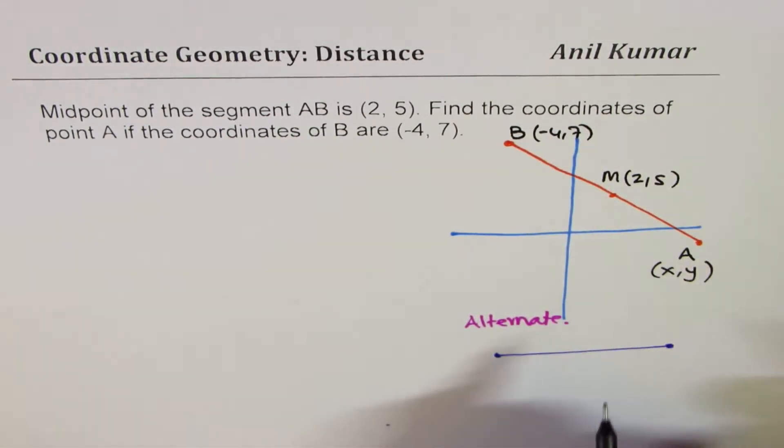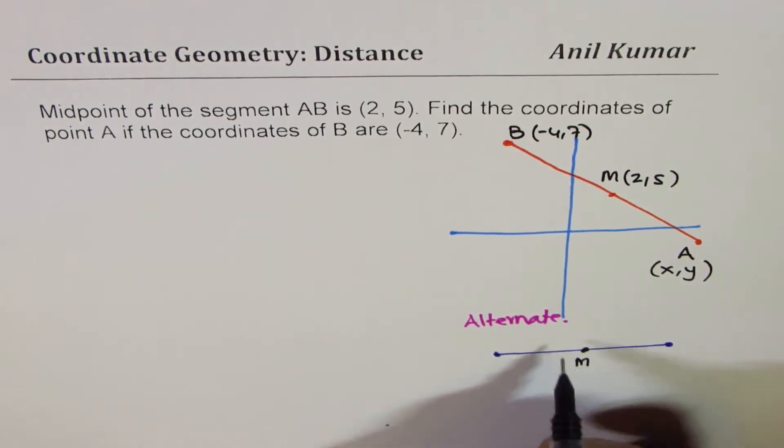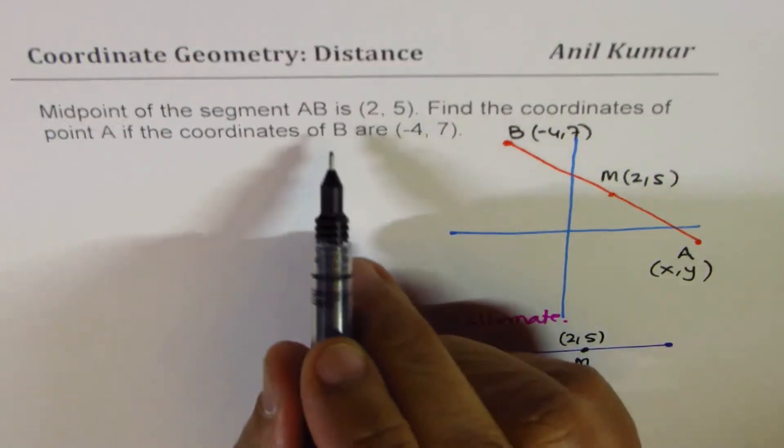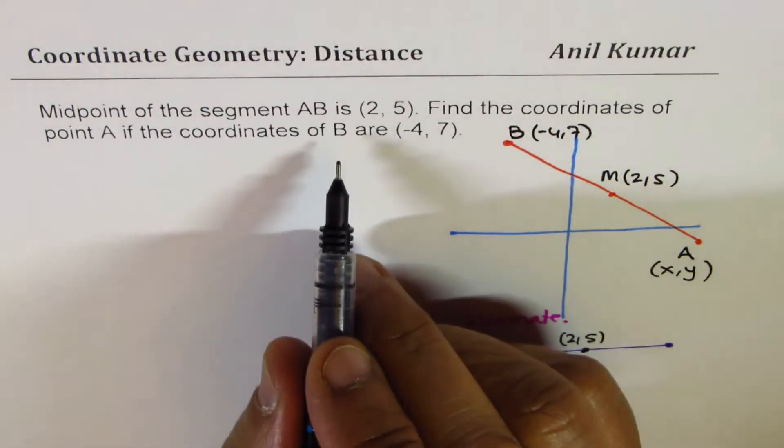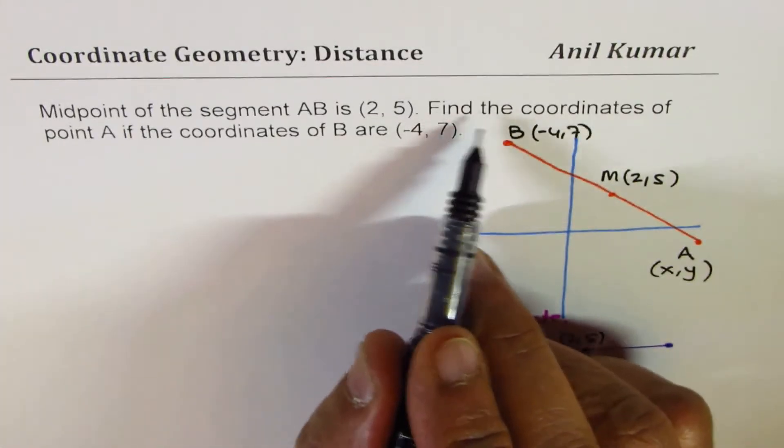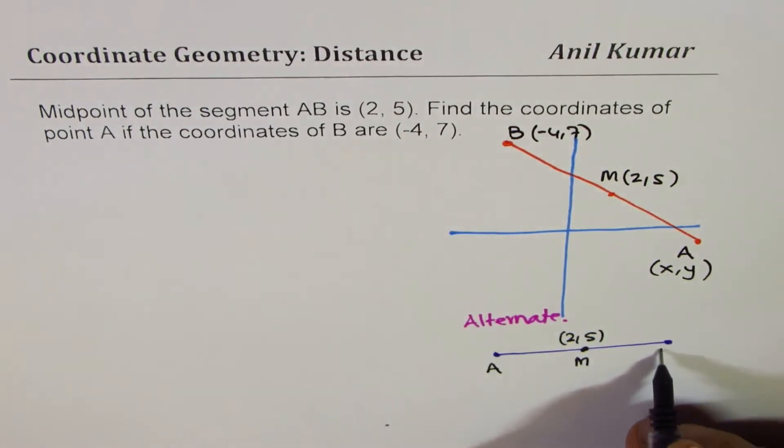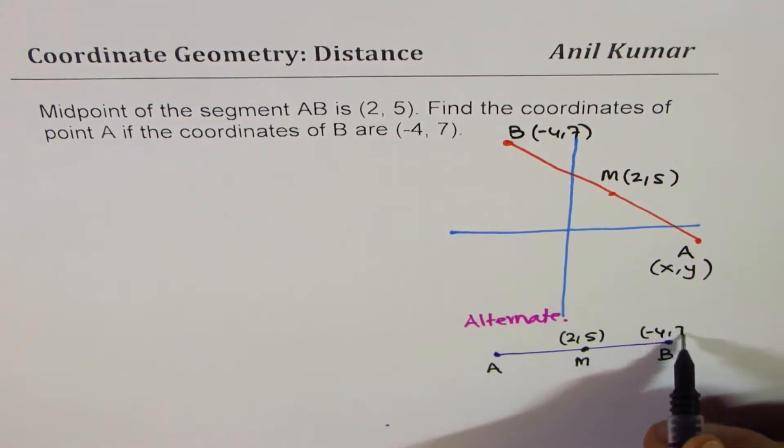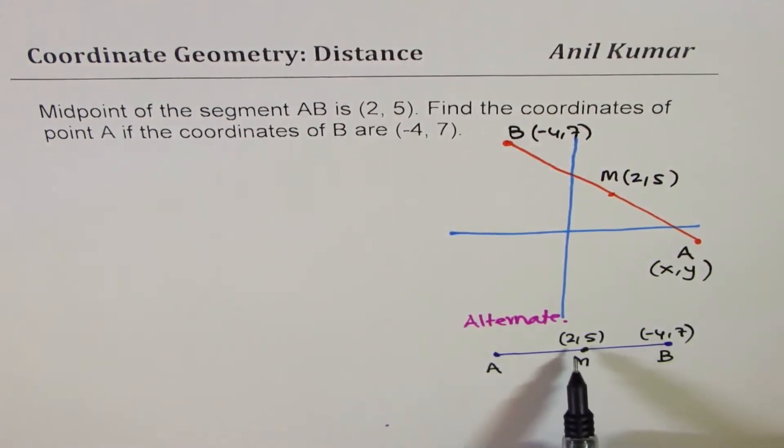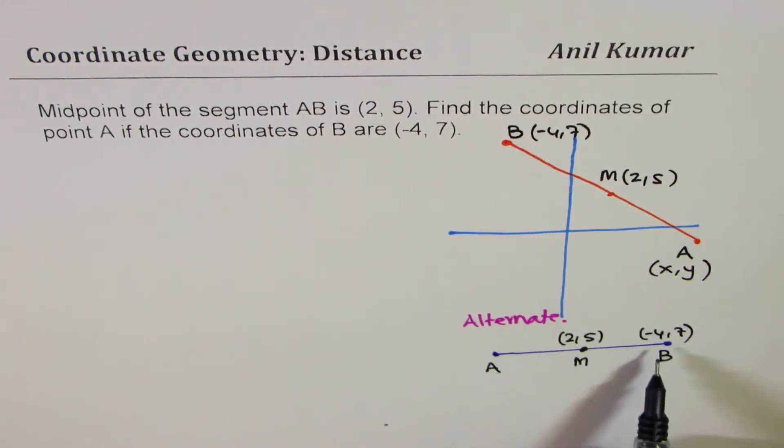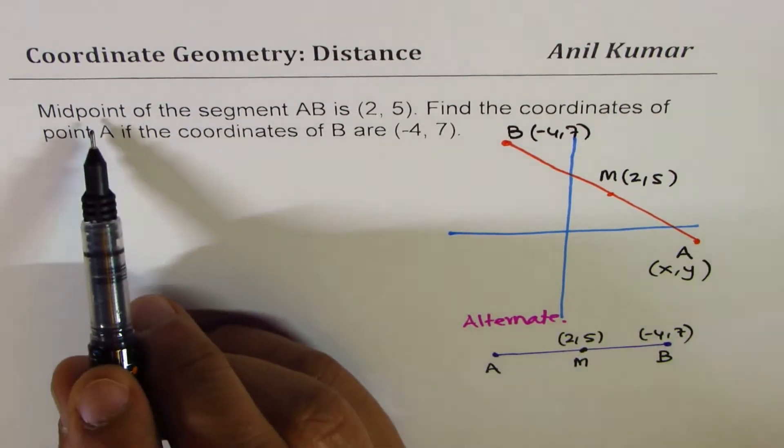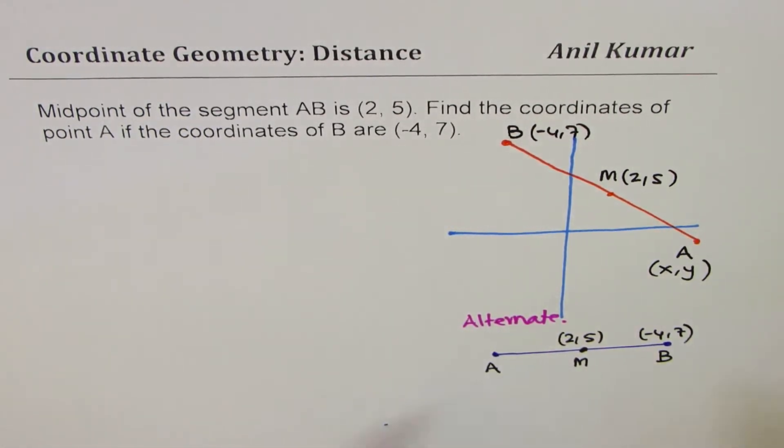So we have a midpoint at (2, 5). So we'll say just midpoint here is at coordinate (2, 5). We are given one point, find the coordinates of A. So let me write A here. B is given to us as (-4, 7). You see how wrong this sketch is. Minus 4 is coming to the right side. But it doesn't matter. When the question is on midpoint, this diagram is good enough.